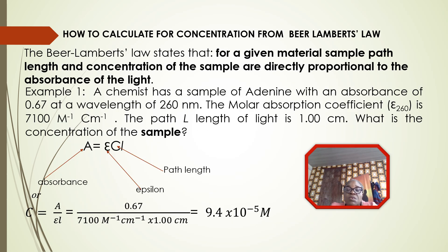How do we calculate concentration from Beer-Lambert law? We must use the information in the problem statement to determine what variables are given and what variables need to be solved for. We will then use the Beer-Lambert law equation and rearrange it if needed to solve for the missing variable. The Beer-Lambert law states that for a given material, the path length and concentration of the sample are directly proportional to the absorbance of the light.